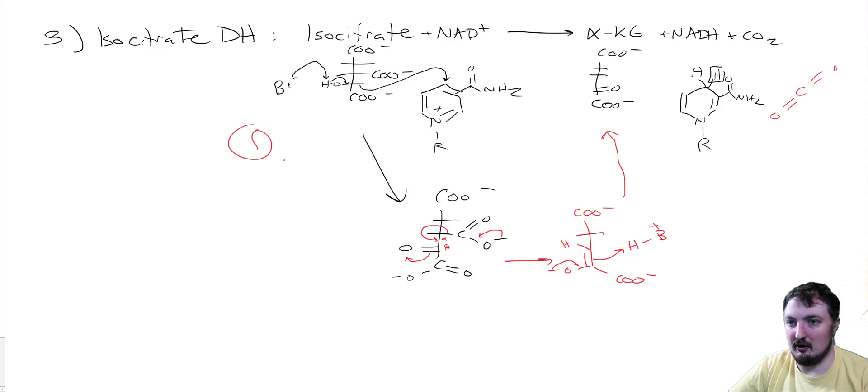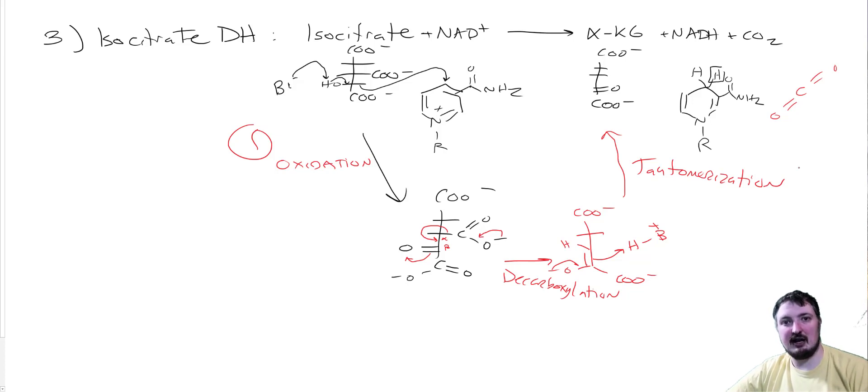The first phase is our oxidation phase. Our second phase is our decarboxylation. Then this would be tautomerization. So that's the first three reactions. We still have alpha-ketoglutarate dehydrogenase, succinyl-CoA synthetase, succinate dehydrogenase, which we're going to talk about in gory detail in the electron transport chain, then fumarase and malate dehydrogenase. We have five more to go on the mechanisms for Krebs cycle. Strap in, we got more to go.